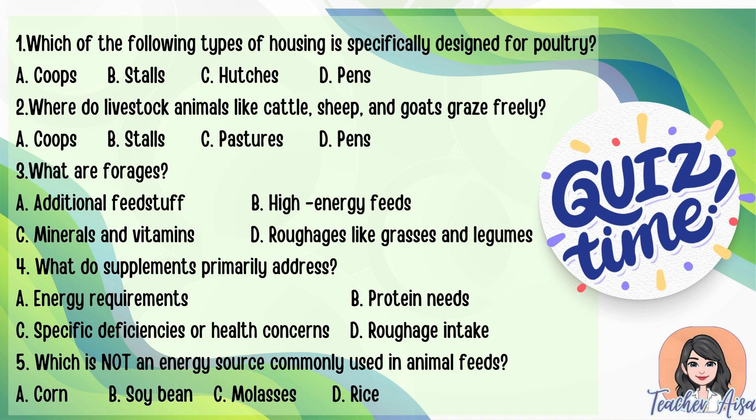3. What are forages? a) additional feedstuff, b) high energy feeds, c) minerals and vitamins, d) roughages like grasses and legumes. 4. What do supplements primarily address? a) energy requirements, b) protein needs, c) specific deficiencies or health concerns, d) roughage intake. 5. Which is not an energy source commonly used in animal feeds? a) corn, b) soybean, c) molasses, d) rice.